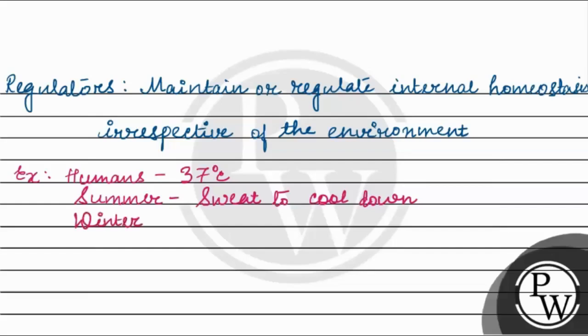Similarly, in winters, when external temperature is very low, heat is generated in the body to maintain that 37 degree temperature. How does this happen? Through shivering. Shiver to generate heat.